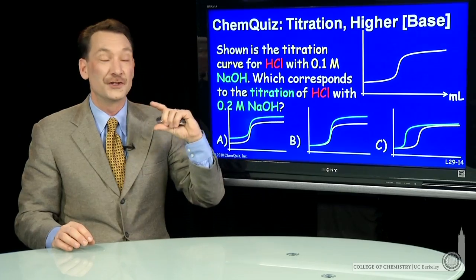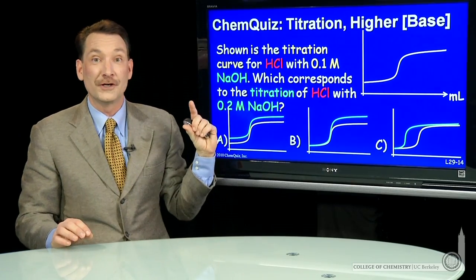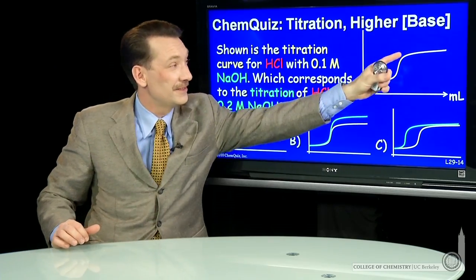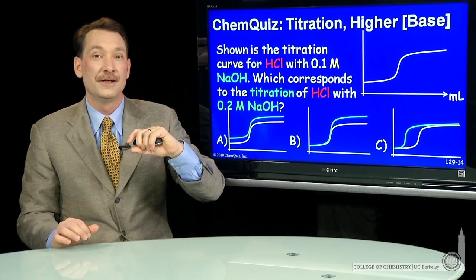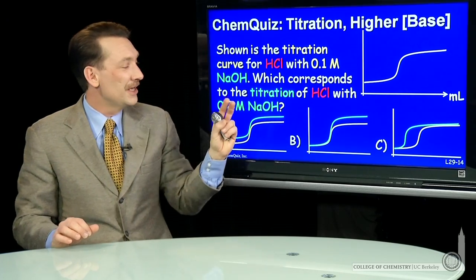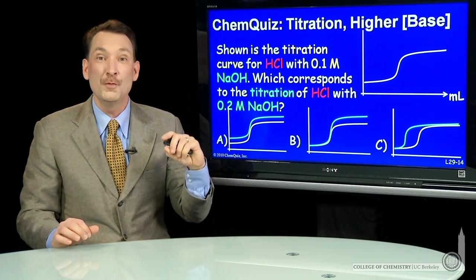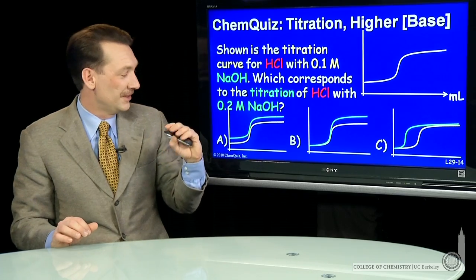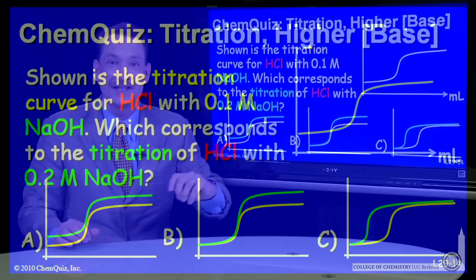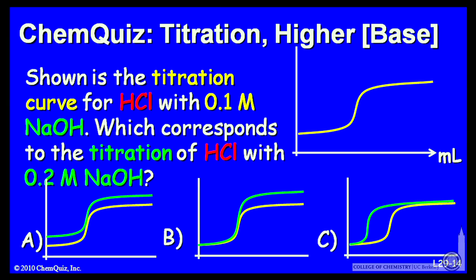If I titrate an HCl solution with 0.1 molar NaOH, I get this titration curve. The question is, how does the titration curve change if I titrate with 0.2 molar NaOH? Does it look like A, B, or C? Think about that for a minute and make a selection.